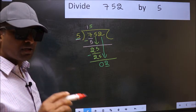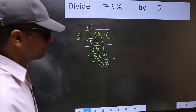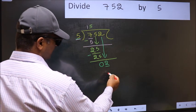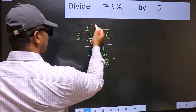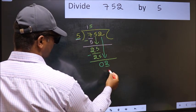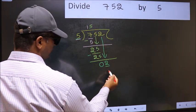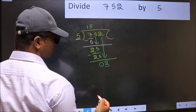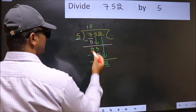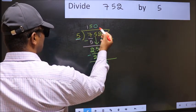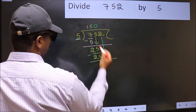Instead, what you should think of doing is, what number should we write here? If I take 1 here, we will get 5. But 5 is larger than 2. So what we should do is, we should take 0. So 5 into 0, 0.